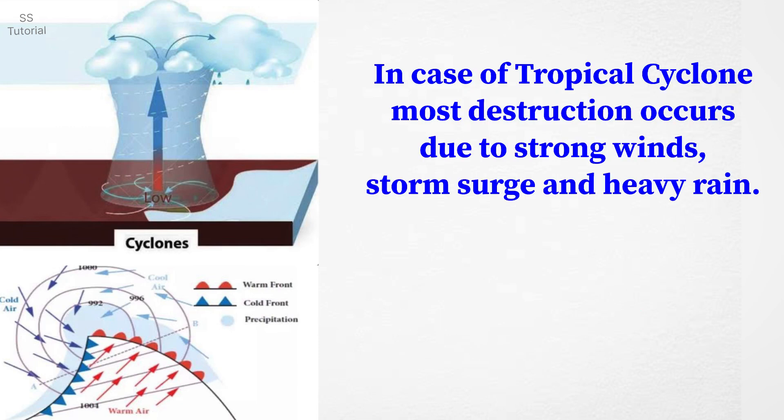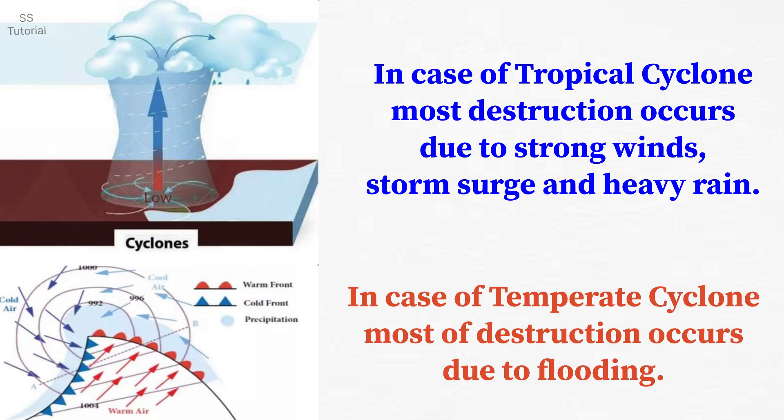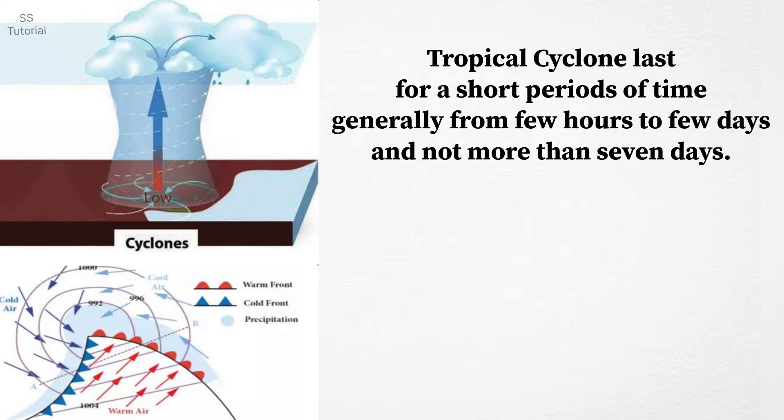In case of a tropical cyclone, most of the destruction occurs due to strong winds, strong surges, and heavy rain. Whereas in case of a temperate cyclone, most of the destruction occurs due to flooding.